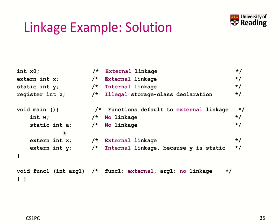Here we have two additional local variables. vw doesn't need linkage because it's only known within the function. Then we have a static variable — it does not need linkage either, however its lifetime is throughout the whole program run because it's static, so it has a memory address assigned somewhere. Then we have external linkage for x — x is basically the same variable as declared earlier. Then we have extern int y, which is a funny one: y is already declared as type integer with static, meaning internal linkage. When we say extern here, it will still be internally linked.